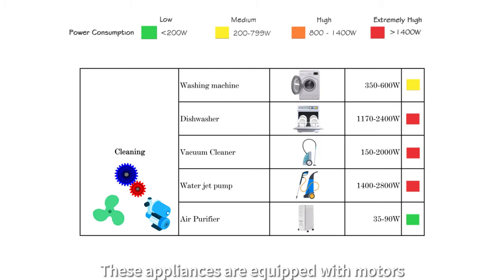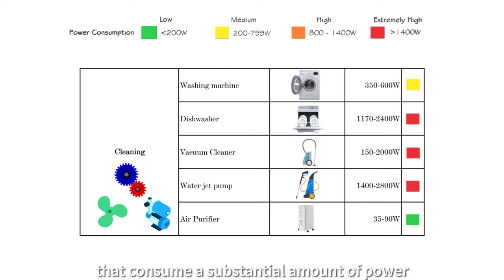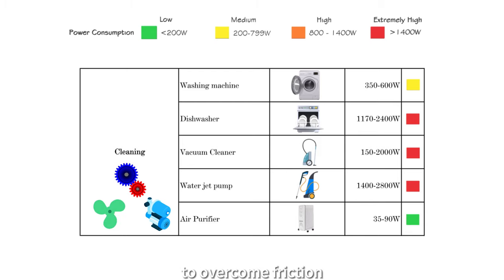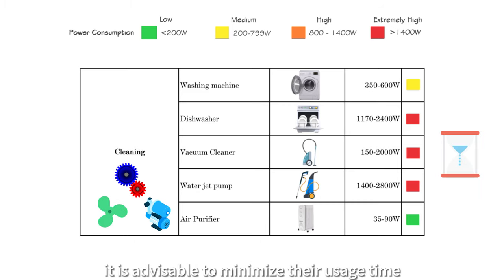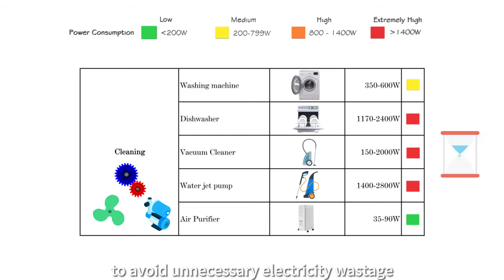These appliances are equipped with motors that consume a substantial amount of power to overcome friction and resistance while operating their fan or pump. Just like high power heating devices, it is advisable to minimize their usage time and frequency to avoid unnecessary electricity wastage.